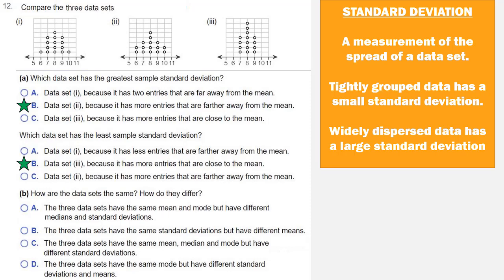But they differ by their standard deviations. So the correct choice for part B is going to be C. The three data sets have the same mean, median, and mode, but have different standard deviations. And that's your answer.